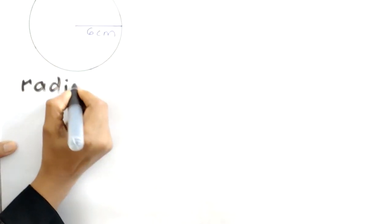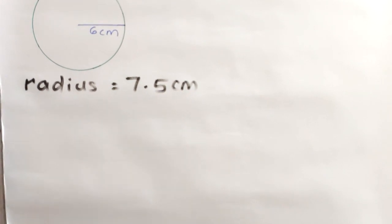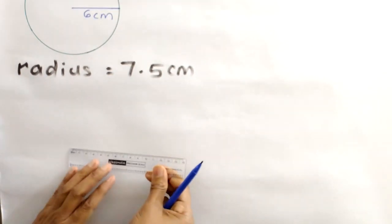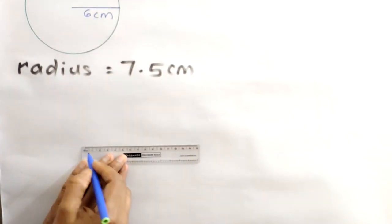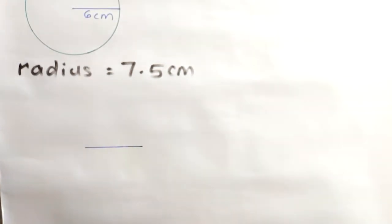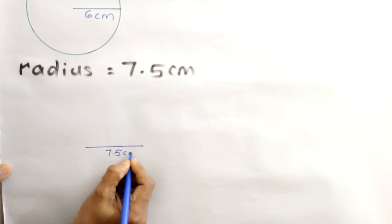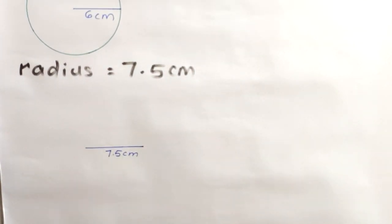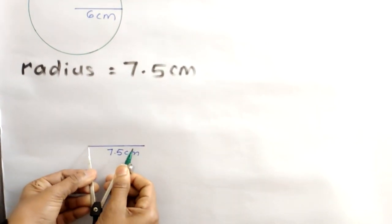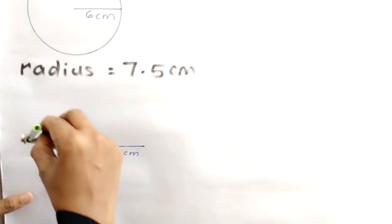Next, the radius is 7.5 cm. First, draw a line segment of length 7.5 cm. Start from 0 till 7.5 cm — that means the middle division between 7 and 8. Then place the metal tip on one end and the pencil tip on the other end, and draw the circle.